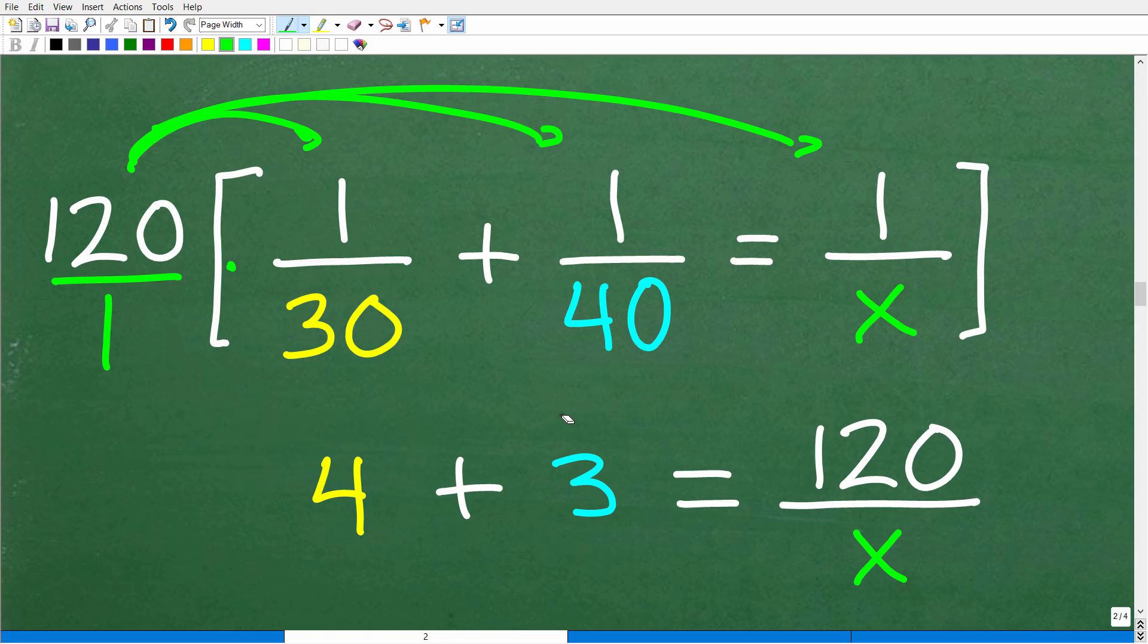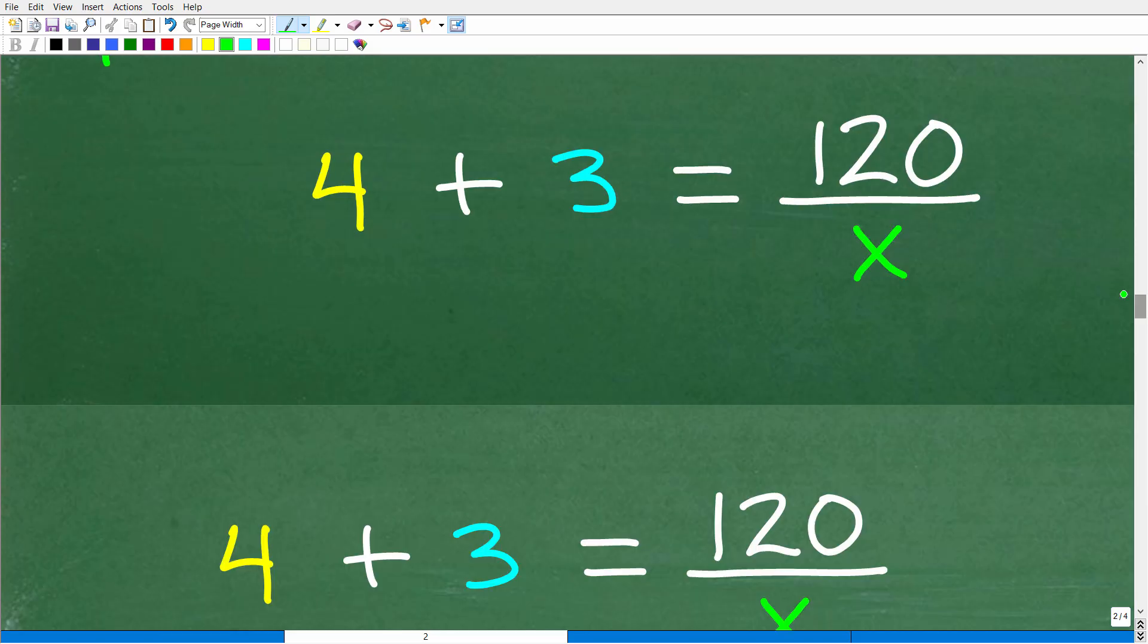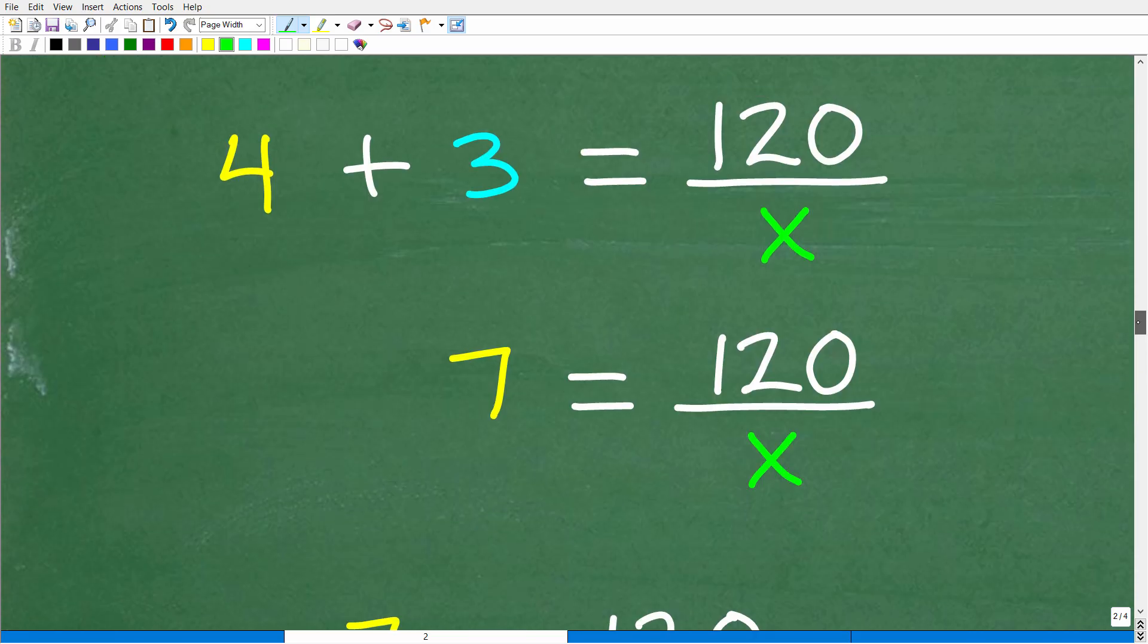We have 4 + 3 and then 120 times 1/x, so this will be 120/x. Hopefully you're like, yes, indeed, I see where this is going. Because now, over here, instead of all these fractions, I got 4 + 3. What's 4 + 3? Well, 4 + 3, the last time I checked, is 7. So now we have 7 = 120/x.